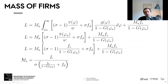This concludes our analysis of the closed economy of the Melitz model. What's important here is the cutoff. We've determined the cutoff, and we've seen that changing the cutoff is going to change the selection of firms and how much each surviving firm produces.